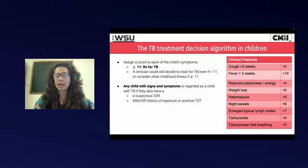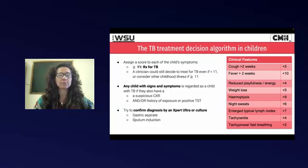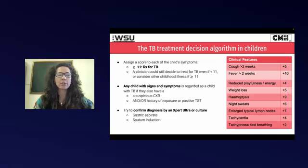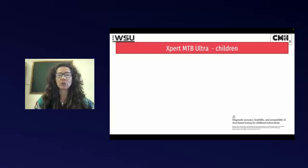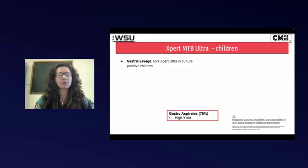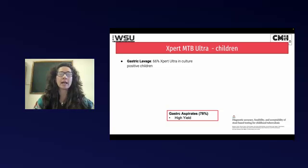So we try and have quite a high index of suspicion. But ideally, you do want to try and get some sort of bacteriological confirmation. Our classic ways of doing that are usually gastric aspirates or sputum induction. Gastric lavage has been around for a long time. There are different stats in different papers in terms of how good it is, now that we've got the GeneXpert.